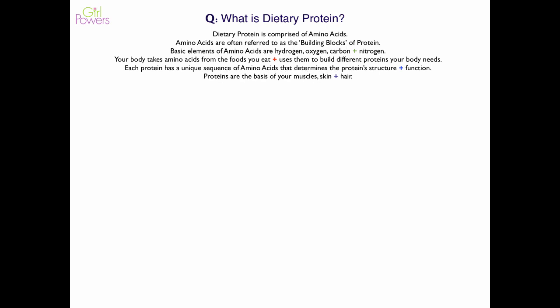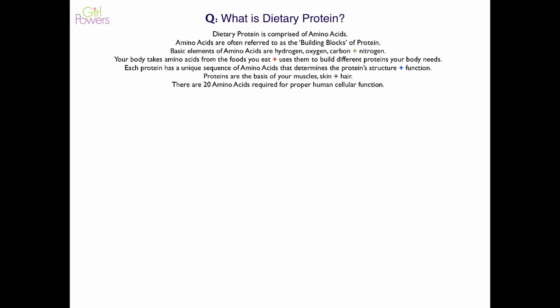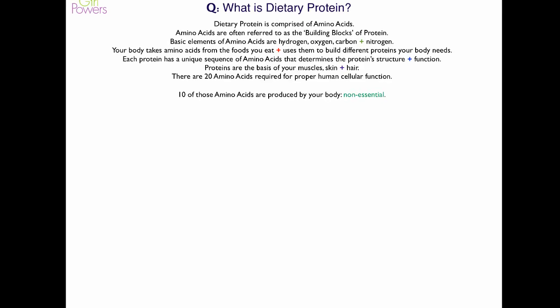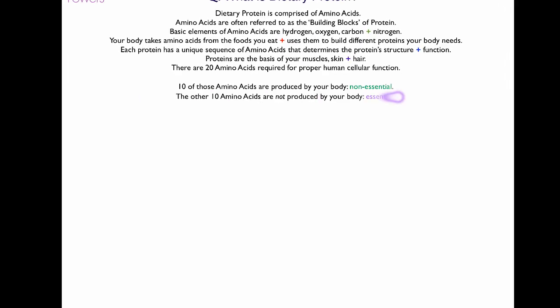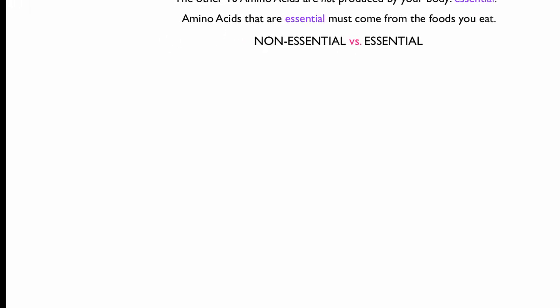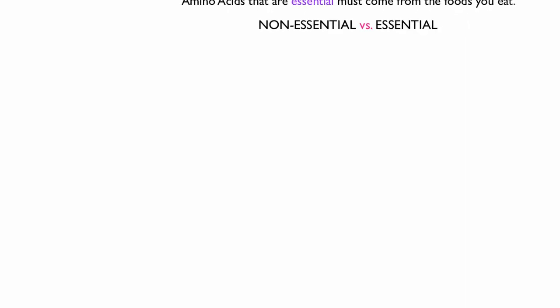Each protein has a unique sequence of amino acids that determines the protein structure and function. Proteins are the basis of your muscles, skin, and hair. There are 20 amino acids required for proper human cellular function. Ten of those amino acids are produced by your body, so they're called non-essential. The other ten amino acids are not produced by your body, so they're referred to as essential amino acids. Amino acids that are essential must come from the foods you eat.